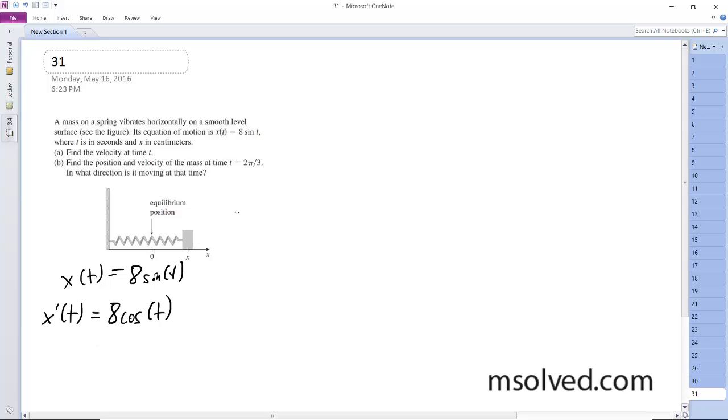So x(2π/3) = 8sin(2π/3), which is 8 times square root of 3 over 2, which equals 4√3 centimeters. That's the position.